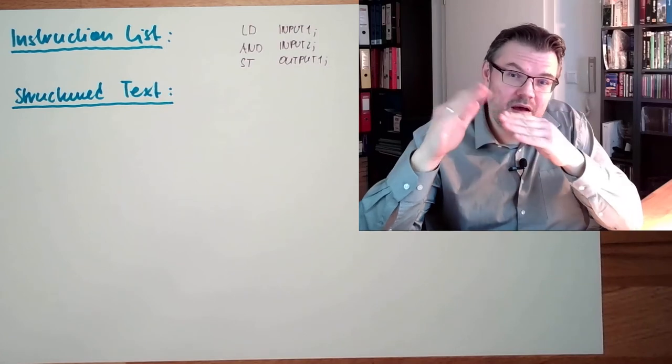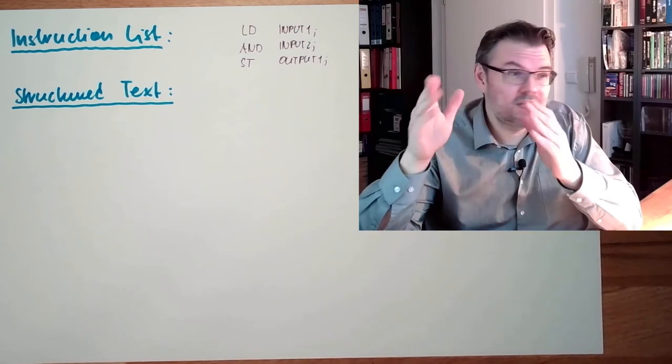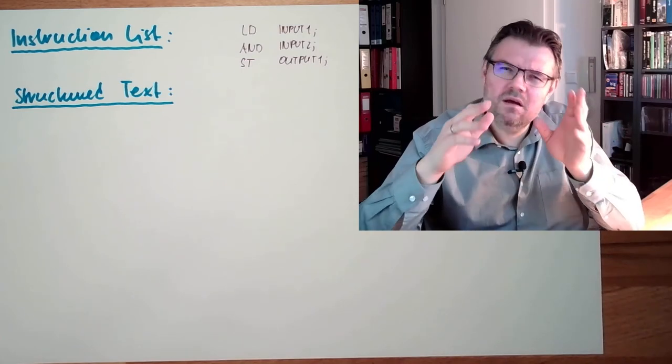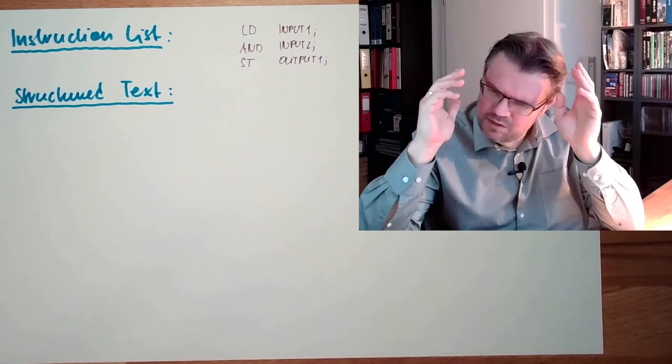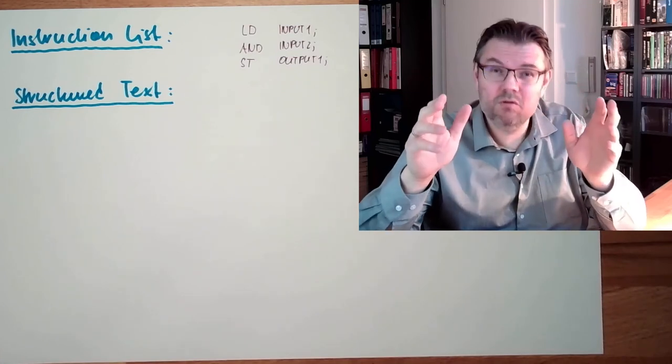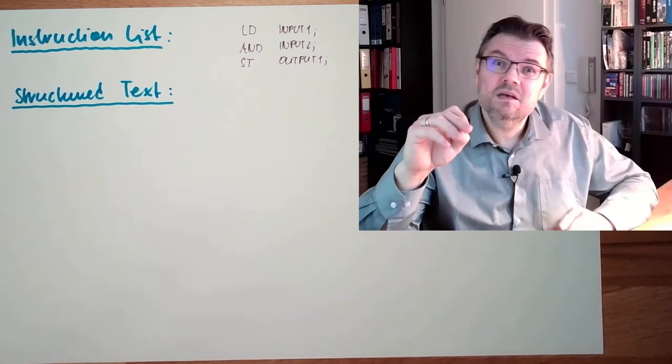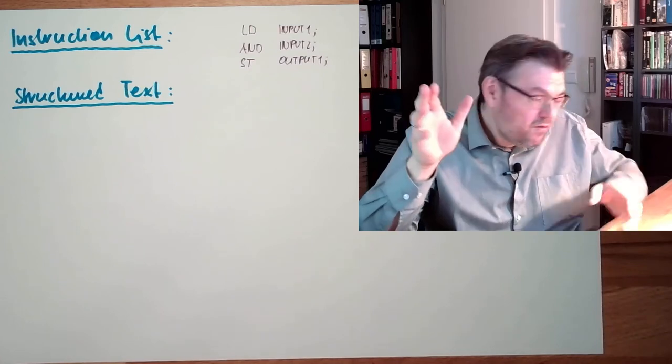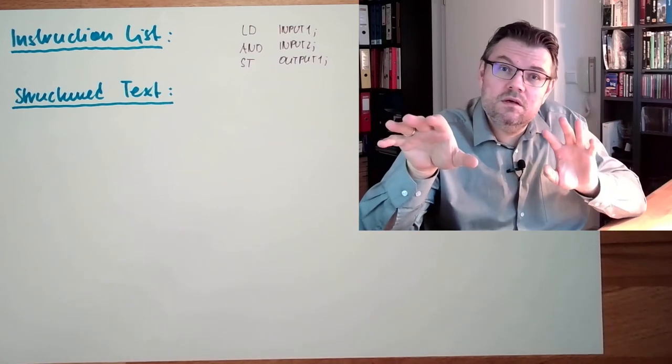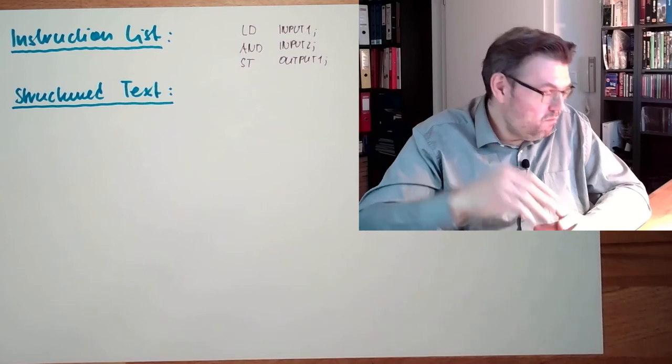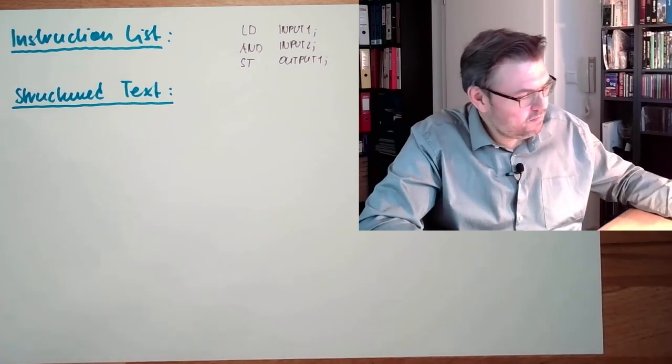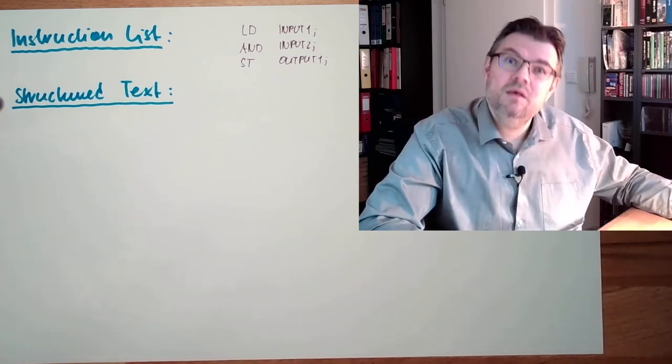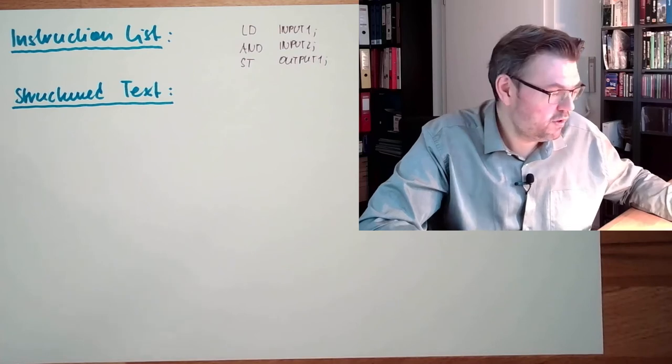So if you have a Bernecker and Rainer, if you have a SAIA, if you have a Siemens, if you have a Beckhoff, I don't know, a Schneider, Mitsubishi, and how they all call, all the PLC manufacturers, Structured Text seems to be really equal on all. Not on every detail of course, because there are hardware dependencies, but this is the - if you want to have interoperability somehow - this would be the language of choice, Structured Text.